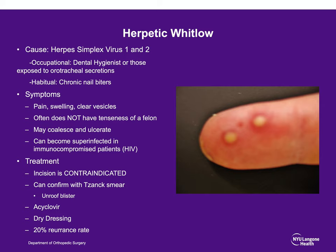Herpetic whitlow is caused by herpes simplex virus 1 and 2. In children it is typically virus 1, and in adults virus 1 and 2. Certain occupations where hands are in patients' mouths, such as dental hygienists, are prone to this. They often present as clear vesicles that can coalesce and ulcerate, and they can become superinfected with bacterial infections. Incision is contraindicated. However, if you need to confirm the diagnosis with a Tzanck smear, you can unroof the blister and culture the fluid. There is a high recurrence rate, and it is often treated with acyclovir and a dry dressing.